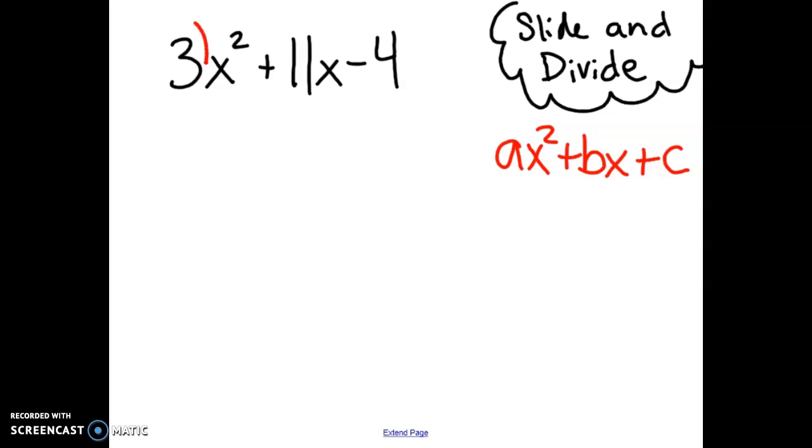So we're going to slide, we're going to take this 3 in the front, the a value, and we're going to multiply it by the c value. We're going to slide it over there. So the x squared stays, the 11x also stays, but we're going to multiply the 3, the a value, times negative 4, the c value, to get negative 12.